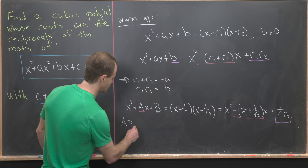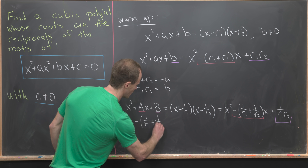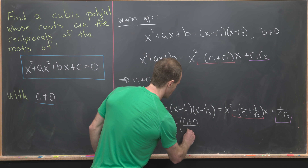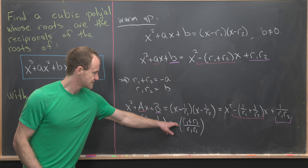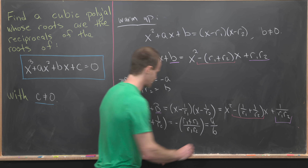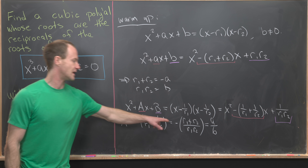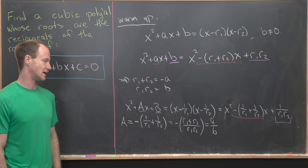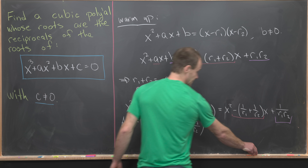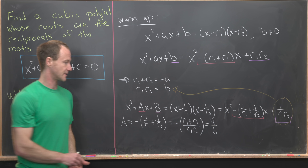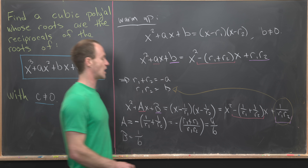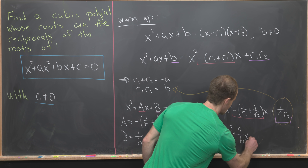Capital A equals negative (1 over r1 plus 1 over r2). Finding a common denominator, this is minus (r1 plus r2) over (r1 times r2). The minus sign absorbs into r1 plus r2, which is negative a, giving a over b. The denominator r1 times r2 is b, and the numerator r1 plus r2 is negative a, which cancels with the minus sign. And capital B equals 1 over (r1 times r2), which is just 1 over little b. So the polynomial in the quadratic case is x squared plus (a over b)x plus 1 over b.